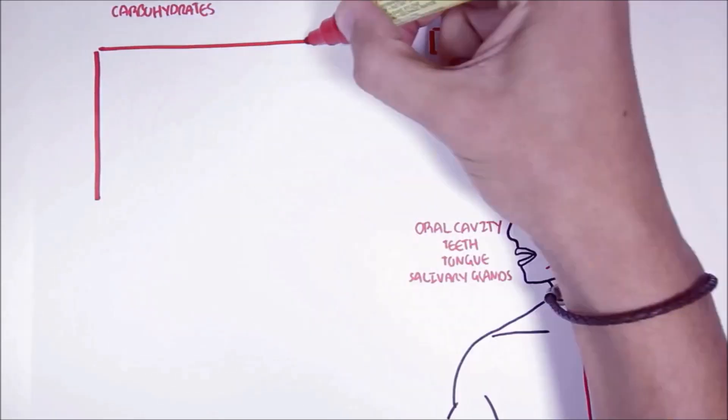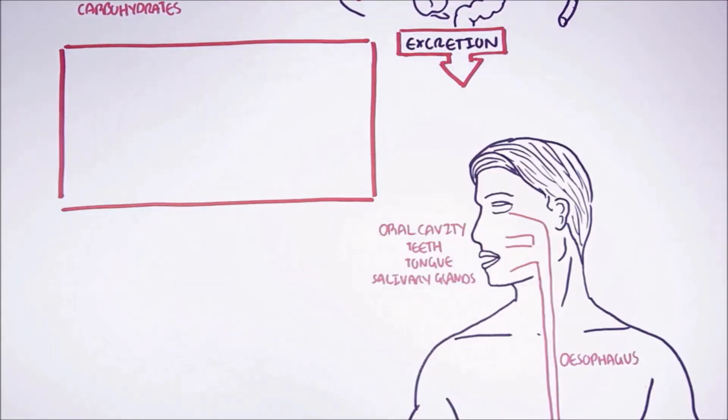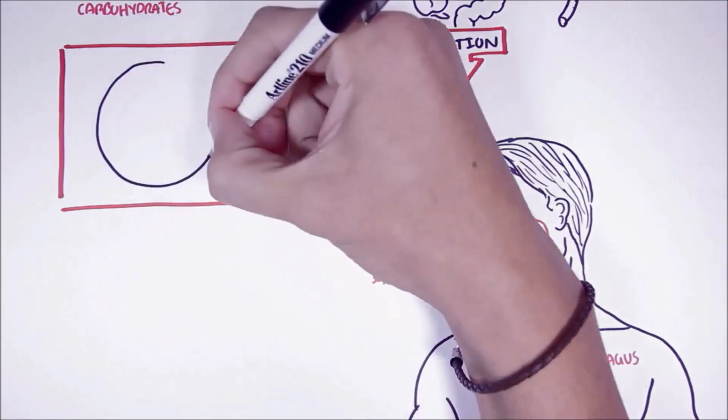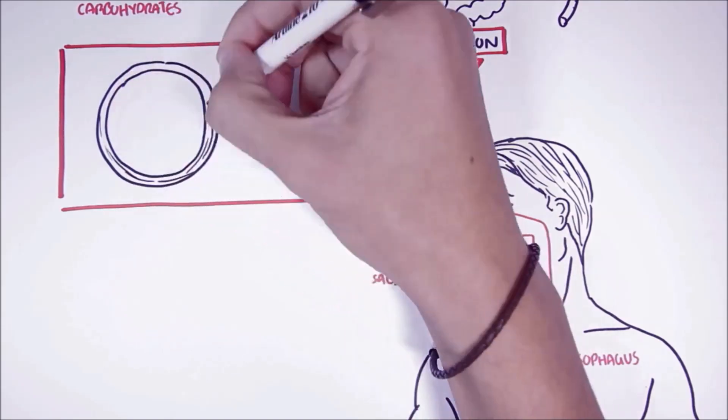Another fundamental point to take in is that the digestive tract all share three similar anatomical properties. Here I am drawing a diagrammatical cross-section representation of the digestive tract.